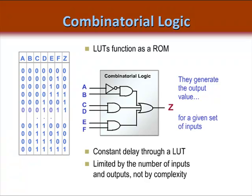A function of seven inputs, for example, might require a second LUT, and if optimized improperly, might add a LUT in series. This would increase the combinatorial logic delay and frequently impact system speed. Notice that the LUT is limited by the number of inputs and outputs, not by the complexity of the logic. In other words, we could implement a simple inverter, a two-input AND gate, or any single-output function of up to six inputs.